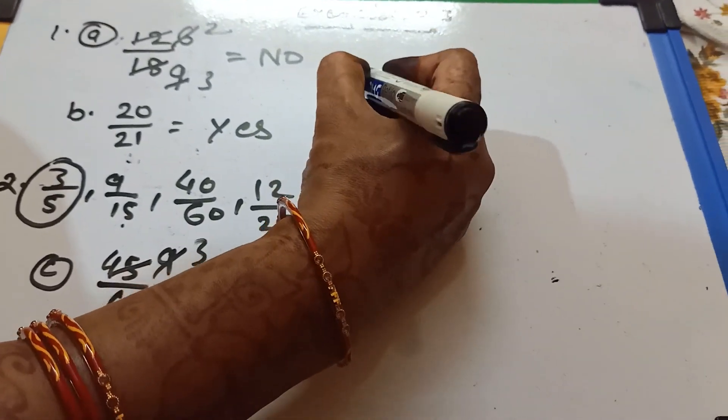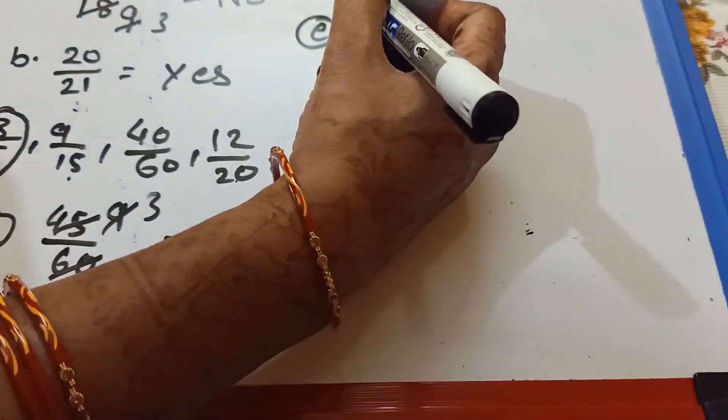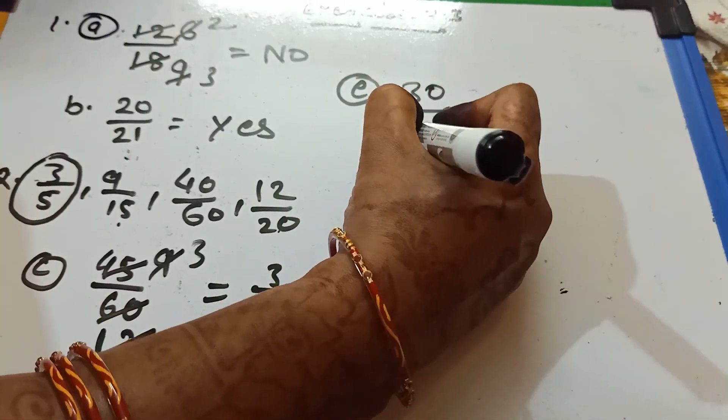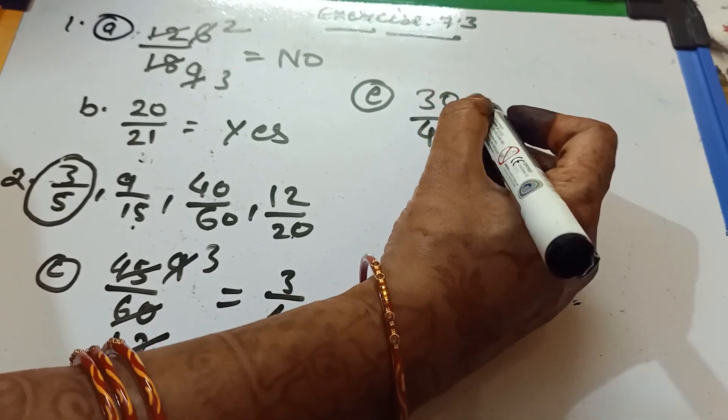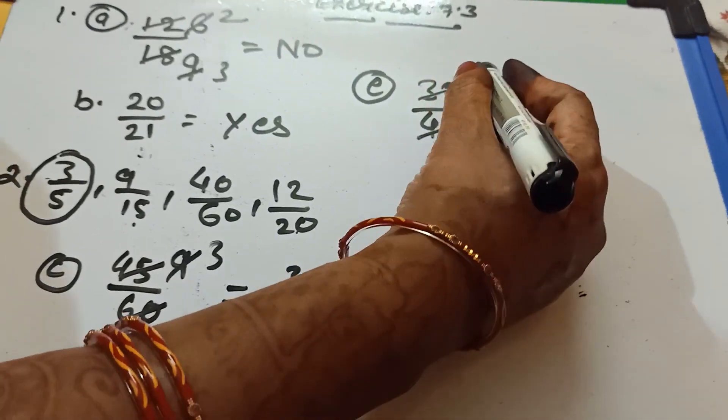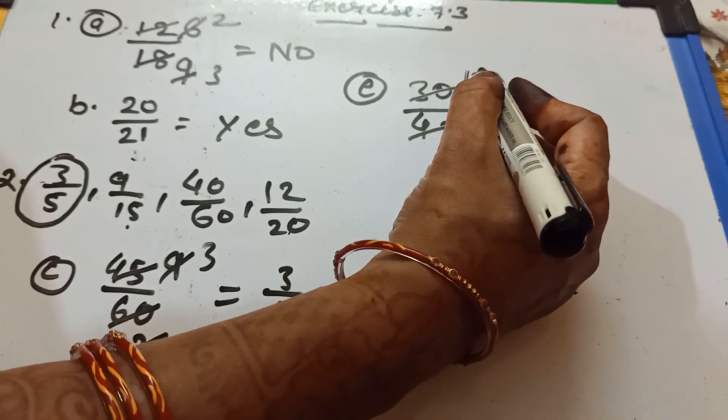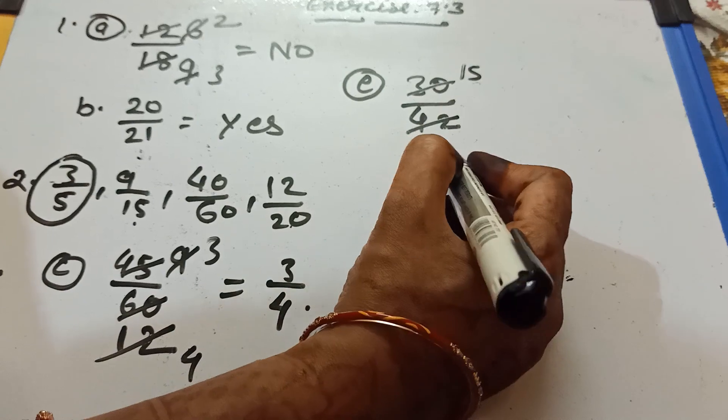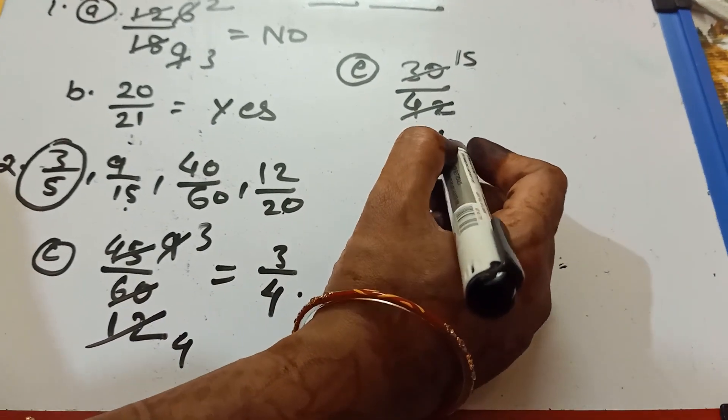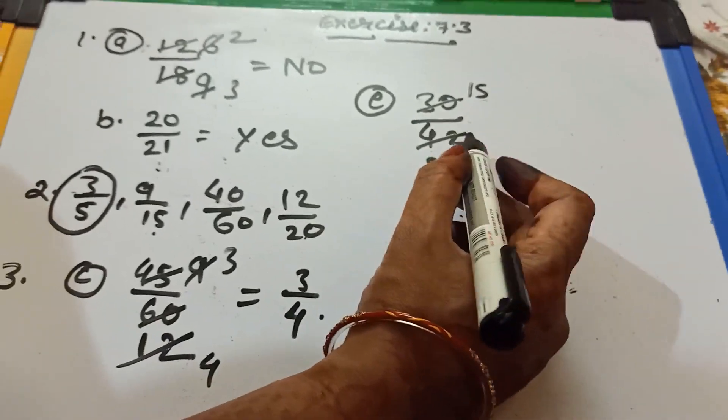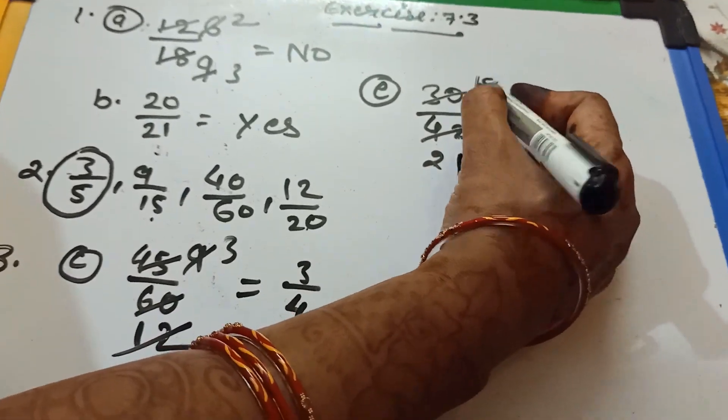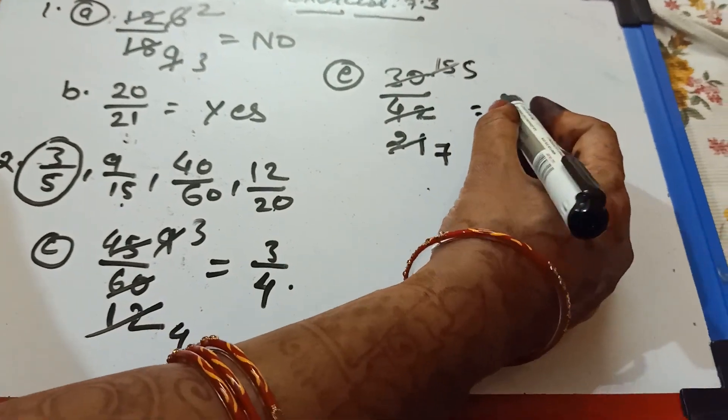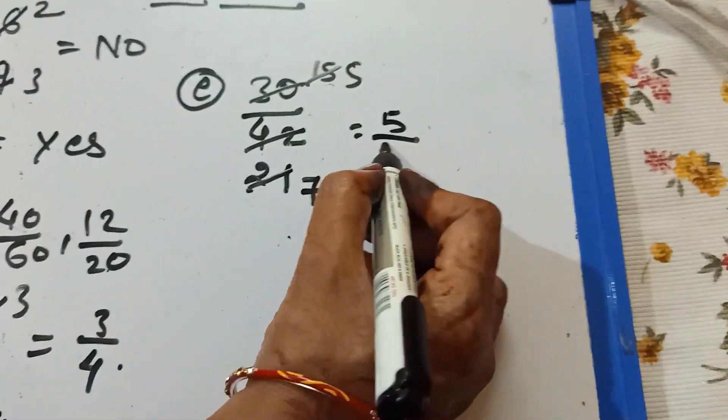Now from question number 3, I am taking question number E. It is 30 by 42. Zero definitely we divide with 2. 2 fifteens are 30 and 2 twenty-ones are 42. And after that, 3 fives are 15, 3 sevens are 21. So lowest term is 5 by 7.